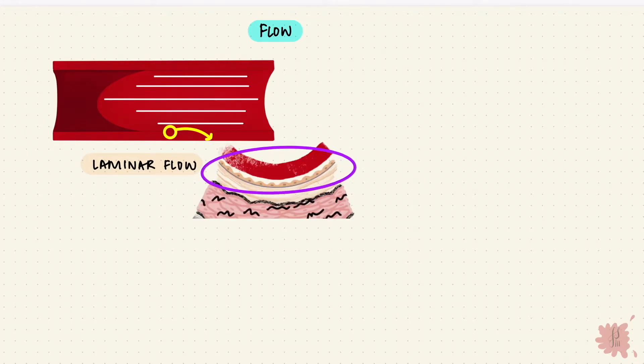There's a lining with endothelial cells. Now that creates drag on the outer layers. So the layer in the center moves fast, while those towards the wall get held back. Now this creates friction on the cells, and that force is called shear stress.